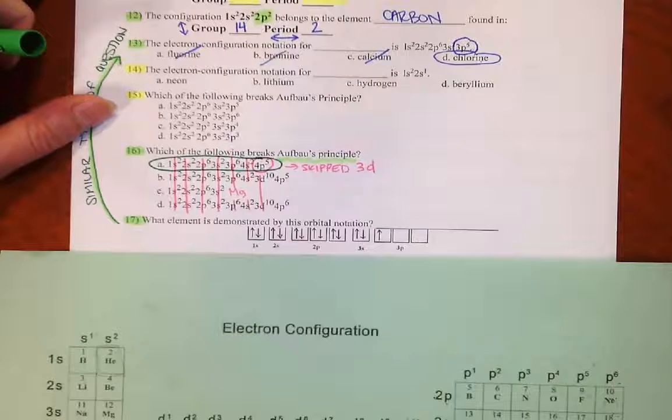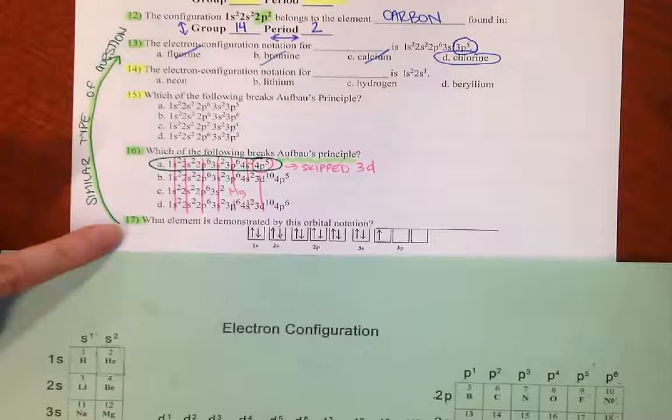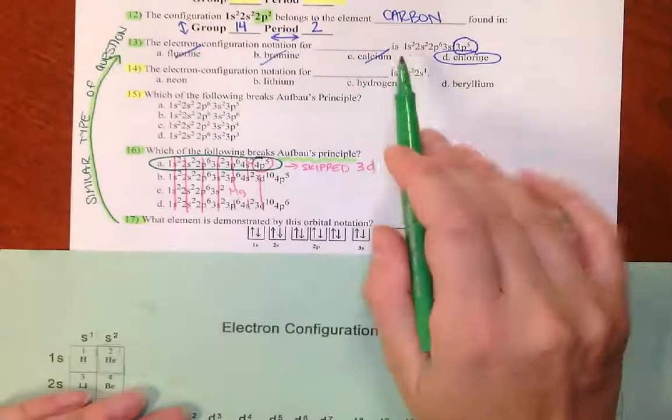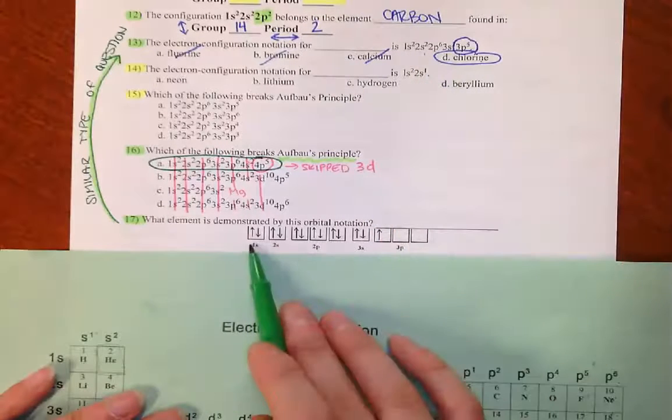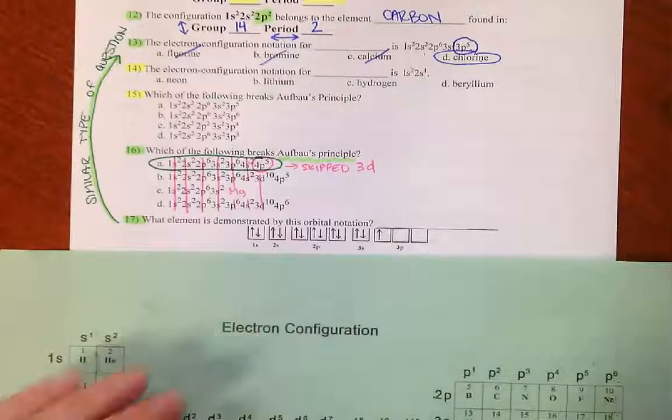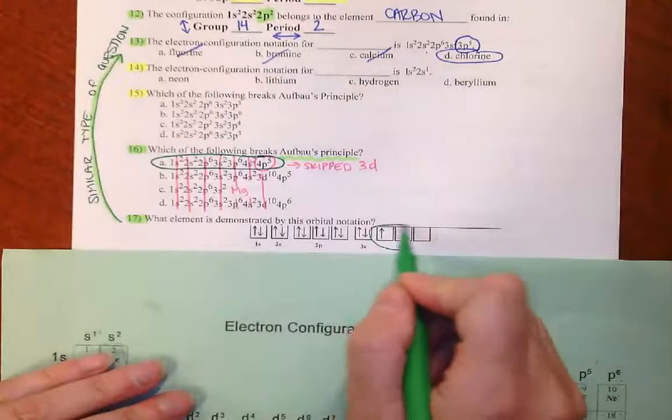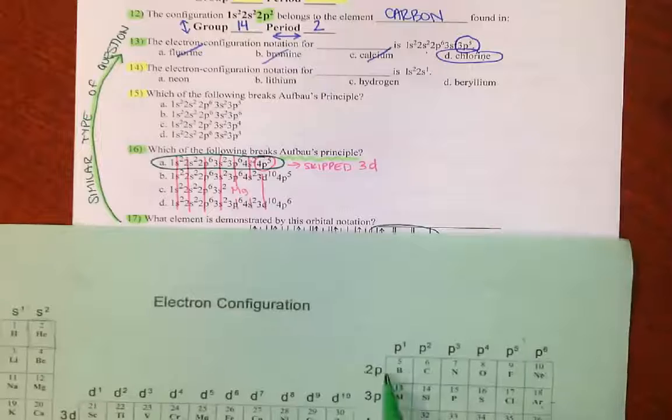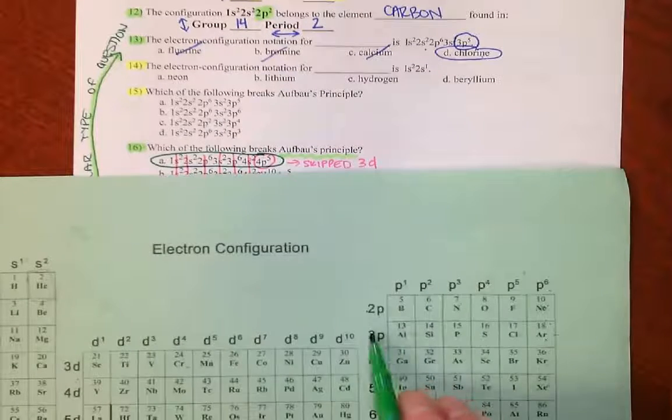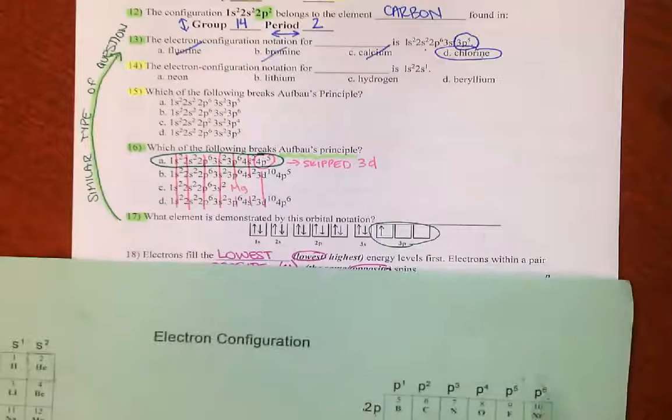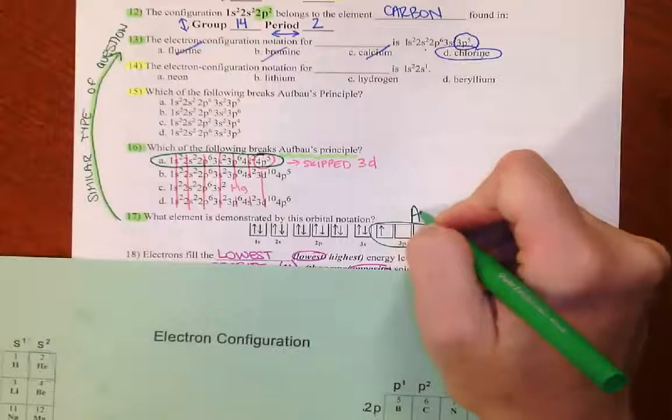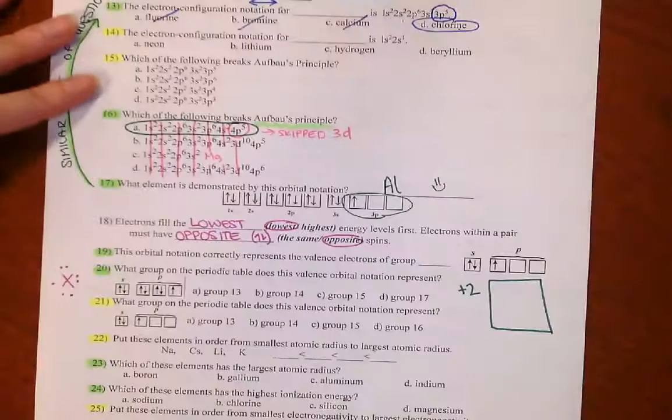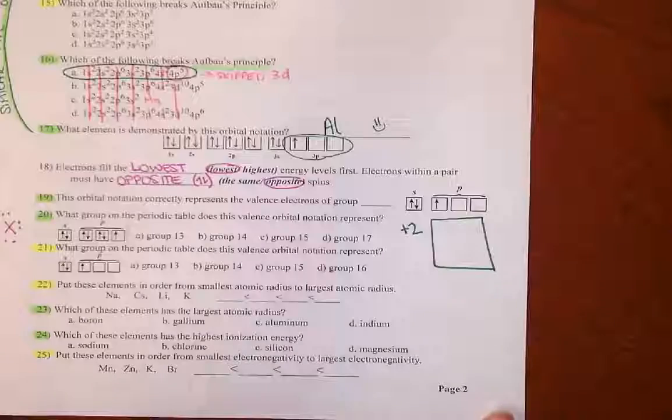17 sometimes freaks people out, but 17 is almost the same question as 13. Where instead of saying 1s2, 2s2, we did 1s, 2 arrows, 2s, 2 arrows. So again, we only need to key on the last orbital. 3p1. And 3p1 belongs to aluminum. So what element is it? I would say Al, aluminum.